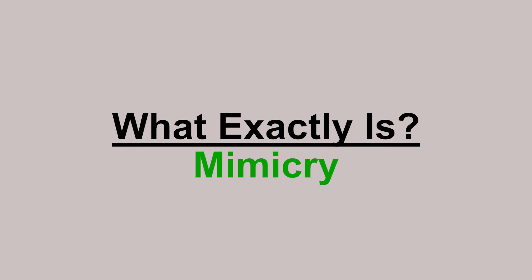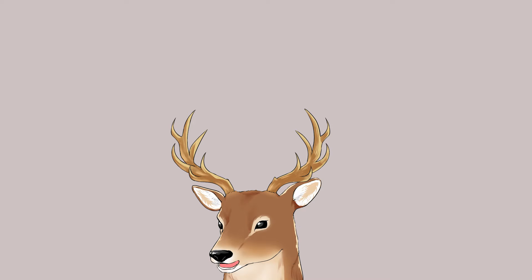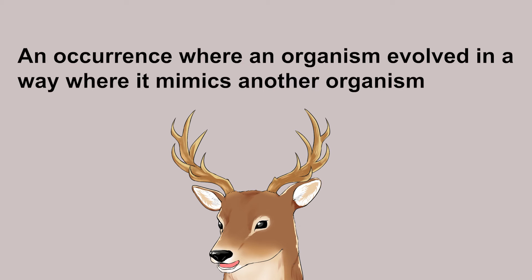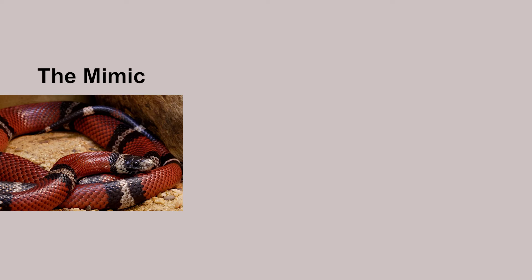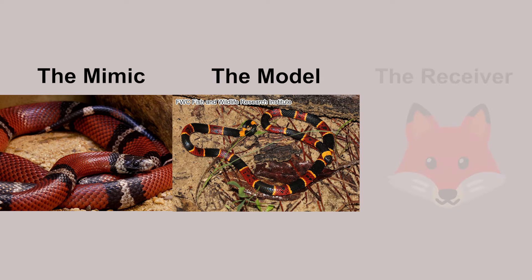What exactly is mimicry? To put it very simply, mimicry can be described as an occurrence where an organism evolved in a way where it mimics another organism. There are generally three sides for the occurrence of mimicry: the mimic, the model, and the receiver.